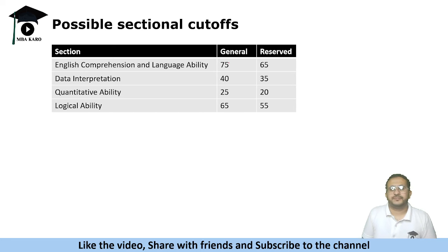If we talk about the English section, since it was the easiest, many students have scored heavily. I don't believe that the cutoff would be less than 75. It has to be around this number or it might be even higher because a lot of students have scored over 100 marks. Data interpretation could be 40 on the higher limit. I don't think it will go beyond this number.